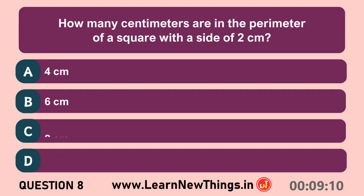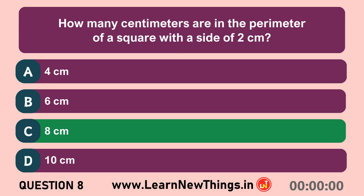How many cm are in the perimeter of a square with a side of 2 cm? 8 cm.